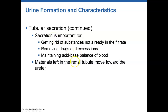We secrete materials in the opposite direction from reabsorption — we're moving materials into the nephron tubules. We're able to do this mainly via active transport mechanisms, so a lot of ATP is needed for us to produce urine and get rid of waste.